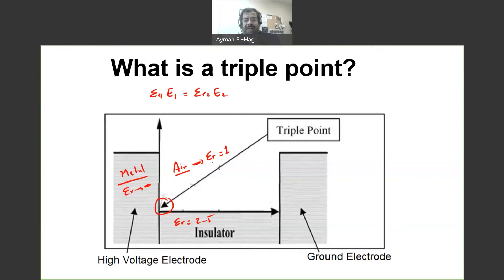Now, when you come to a material like air, this is equal to 1. When you come to material like the insulation or the conductor, this is much higher than 1 for the conductor and 2 to 5. Then what will happen here? The electric field in the air will be much higher than the electric field in the insulating material. So, this will lead to enhancement of the electric field.